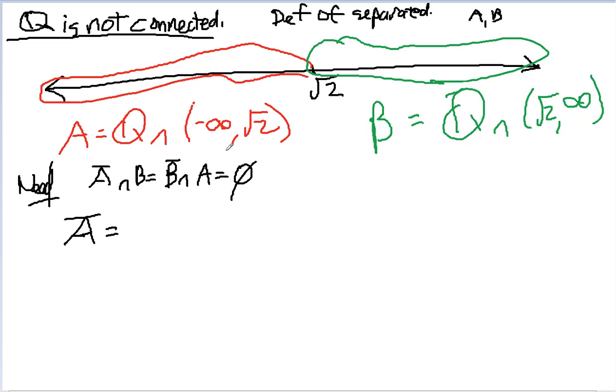And the limit points of this are contained in negative infinity comma square root of 2 closed bracket. So that's the biggest it could be. And notice that if I intersect B with both of these, I get the empty set because the only questionable thing